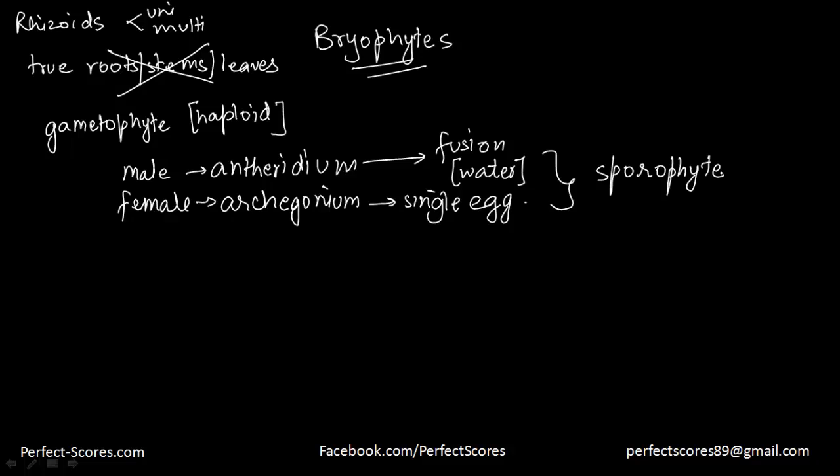Now we're going to do in detail about liverworts and mosses. In liverworts, we did the male thallus and the female thallus. There were some specialized cup-like structures called gemmae. This is in case of liverworts. These gemmae are green, they're multicellular. These are like small buds that develop in receptacles called gemma cups.